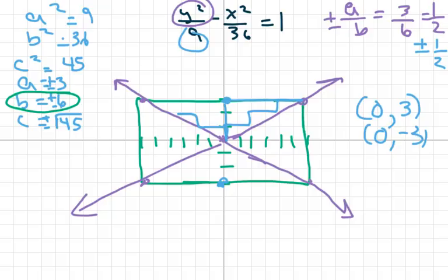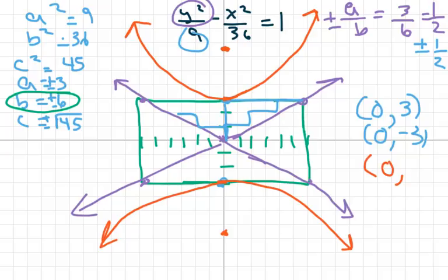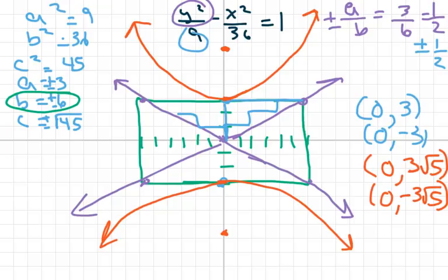The foci are between the square root of 36 and the square root of 49, so between 6 and 7. I mark them on the graph and draw the hyperbola in red opening up and down. The foci coordinates are (0, 3√5) and (0, −3√5). The next video will cover hyperbolas where the center is not at the origin. Thanks and have a nice day!